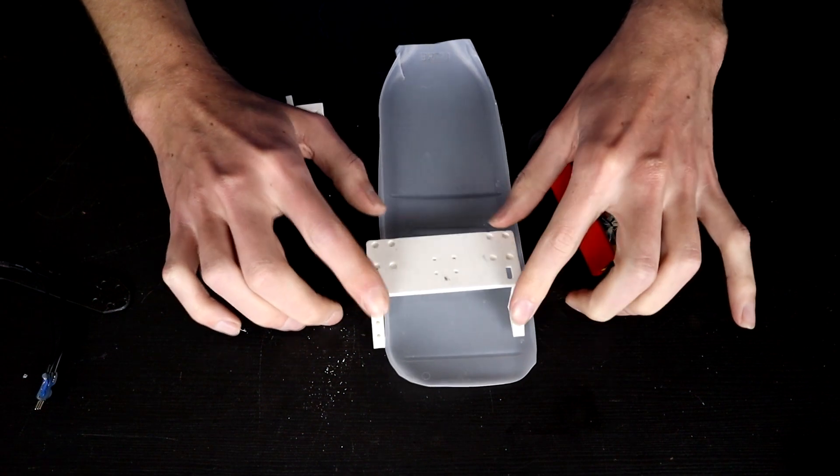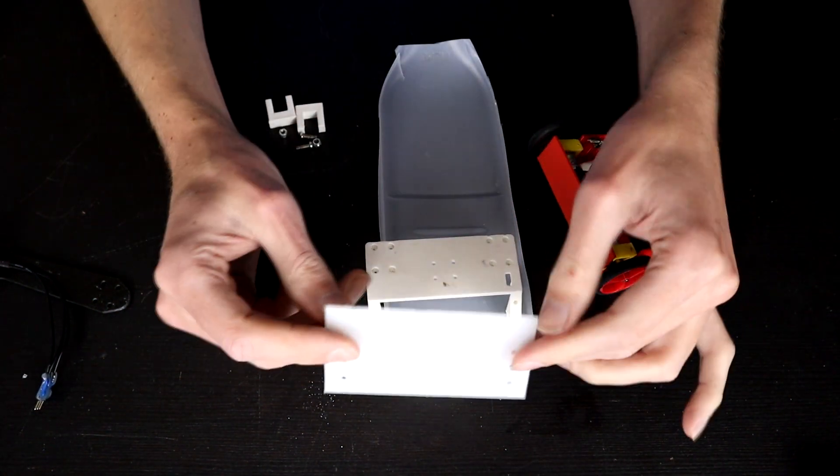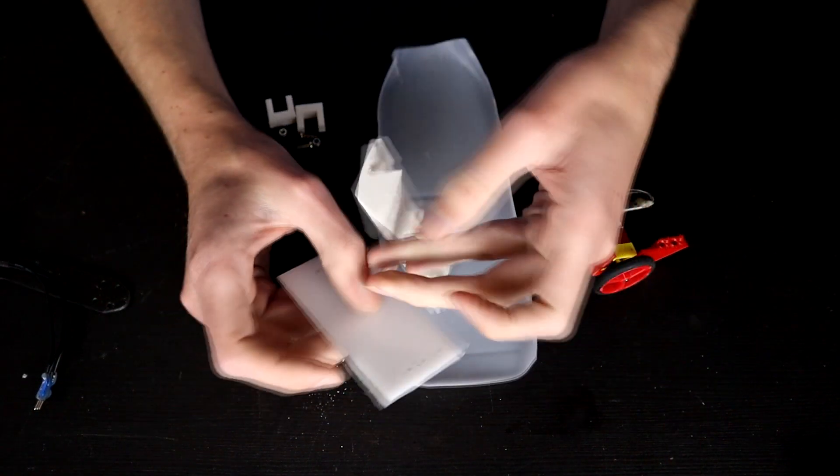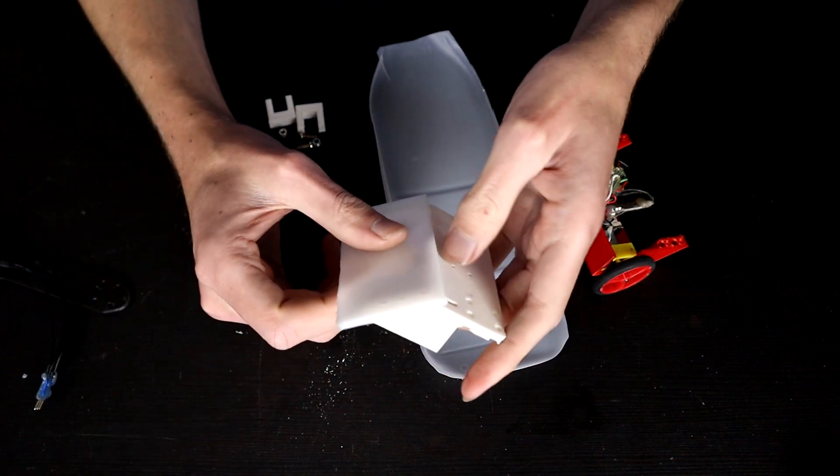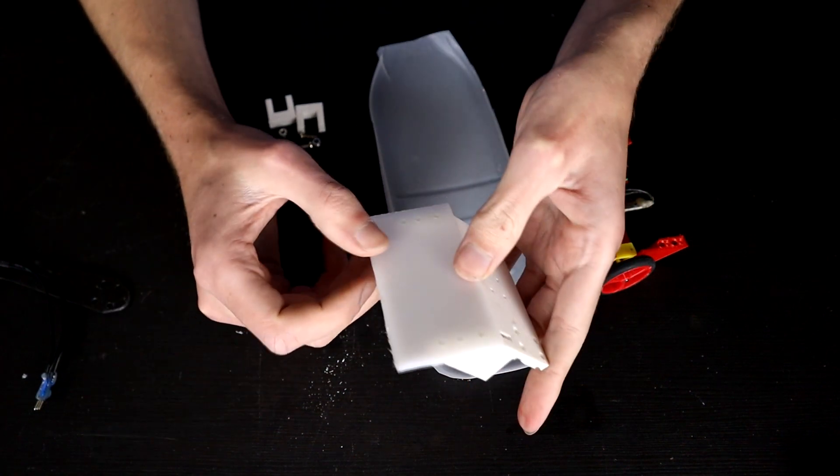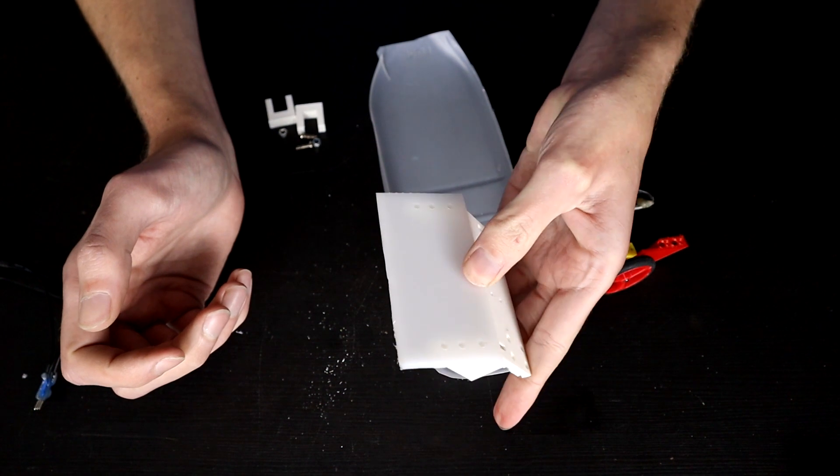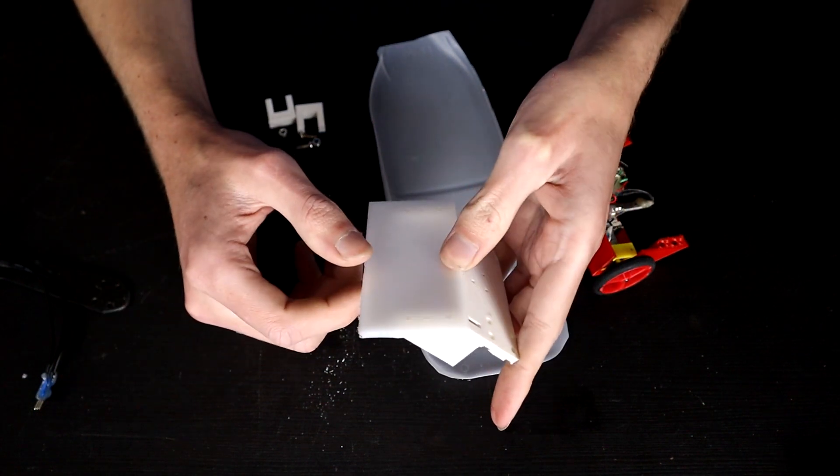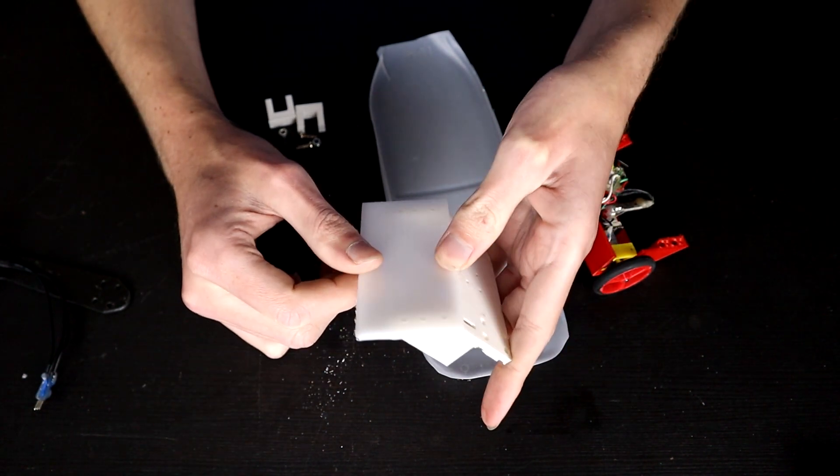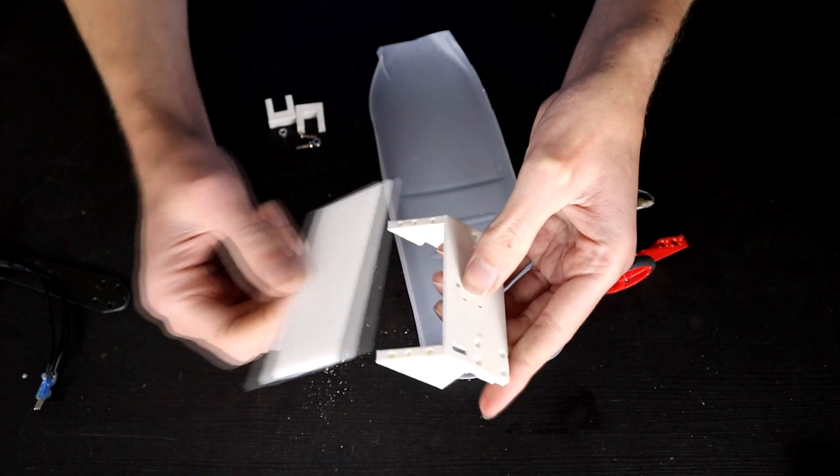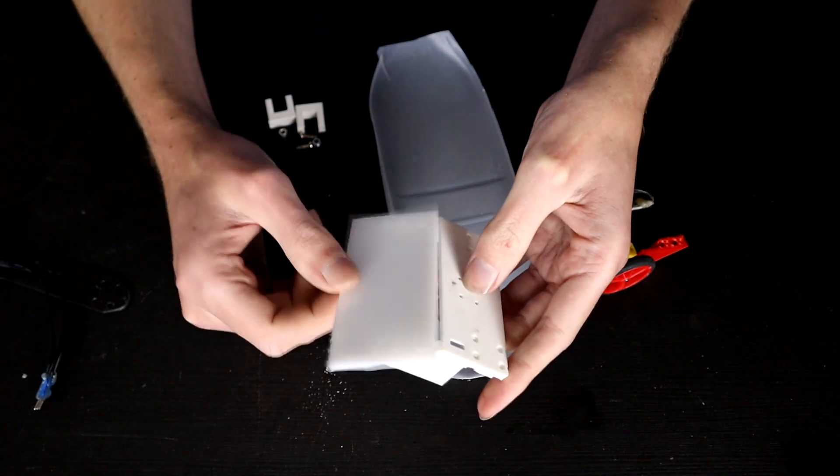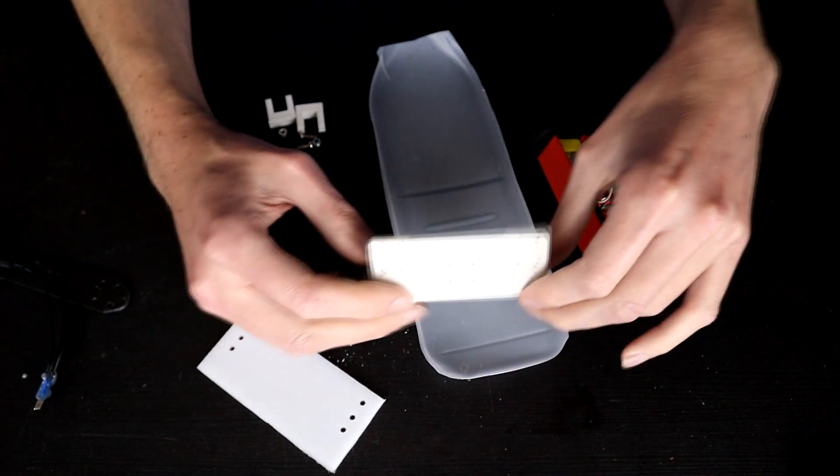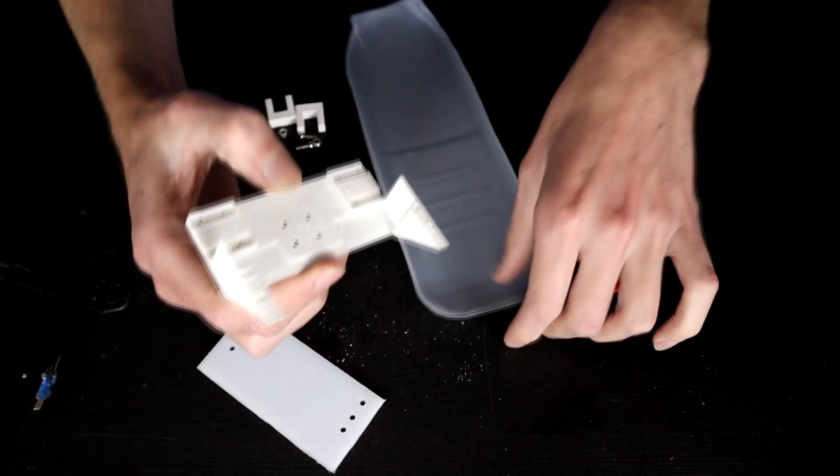However, the front wedge is not going to be milk jug. It is going to be three mil thick HDPE. Nothing should get through this. I have used two mil thick HDPE in the past and had spinners hit it in the antweight division and have nothing happen to it at all. So three mil thick should be, fingers crossed, basically indestructible in this weight class. So this combined with a massive weapon, I think we've got a good chance of doing something with this particular robot.